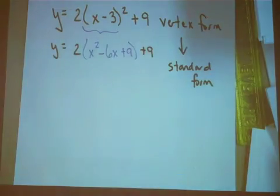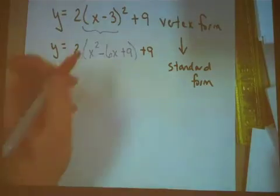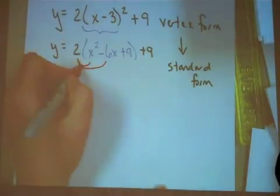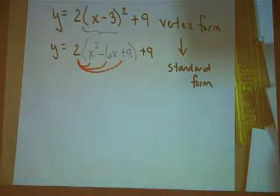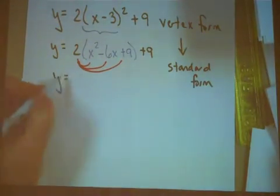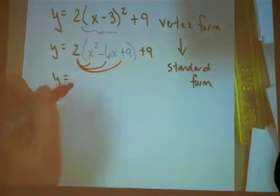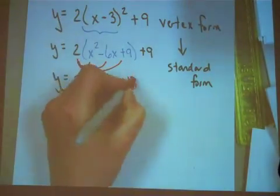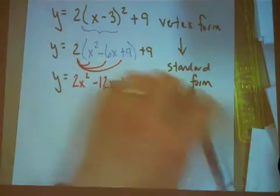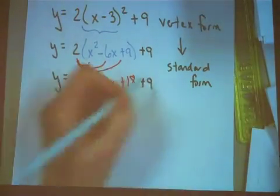Don't forget to bring down the constant of 9. Your second step, now you need to take the a value of 2 and distribute it through the entire trinomial. When you do that, you're going to get y equals 2x squared minus 12x plus 18. Don't forget to bring down the constant of the 9 that we had before.